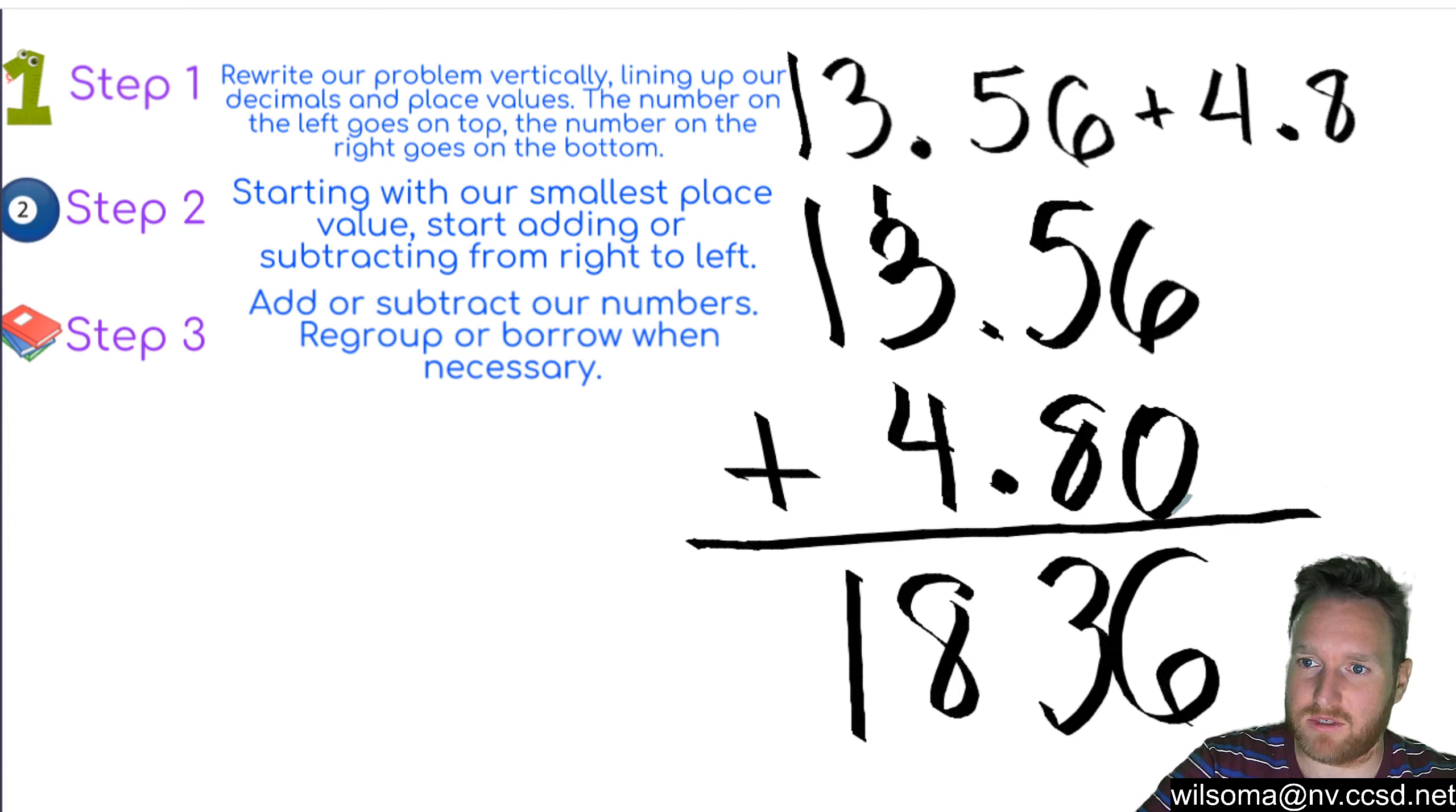And then our decimal, we're just going to bring our decimal down into our answer. Our decimal goes right here. And if we were to estimate these, if we did 13 plus 4, we would get 17. And 18 is pretty close to 17, so we can be very confident in our answers.